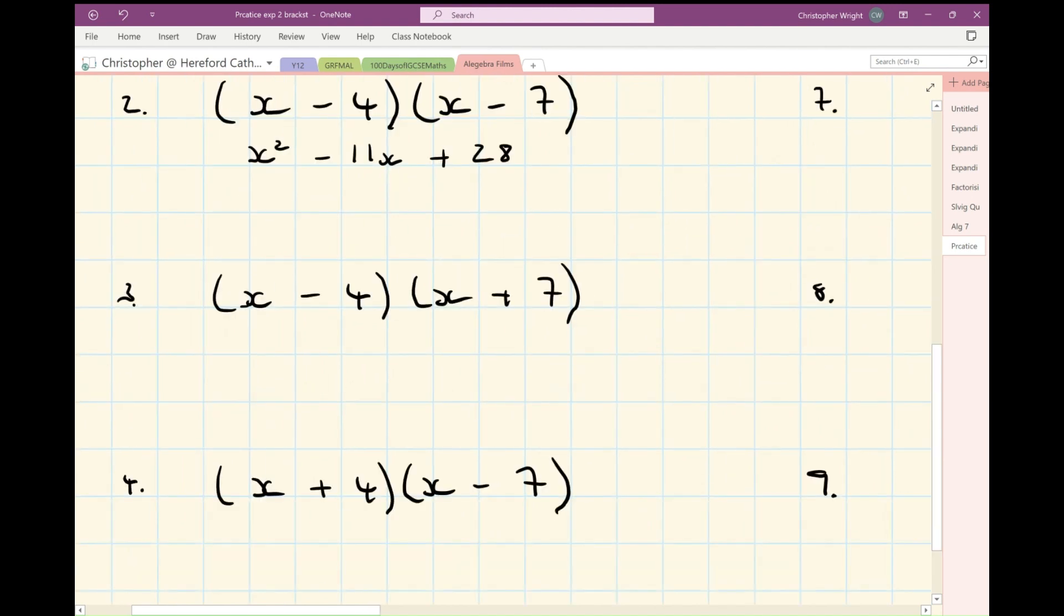Number three, x squared, minus four x from the nose, plus seven x gives me plus three x. And minus four times minus seven is minus 28.